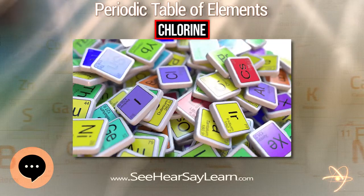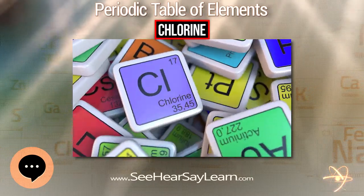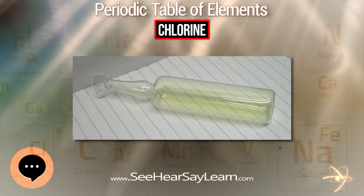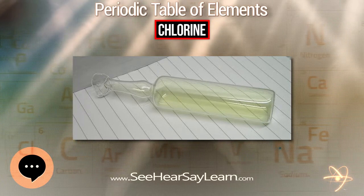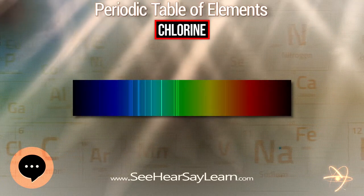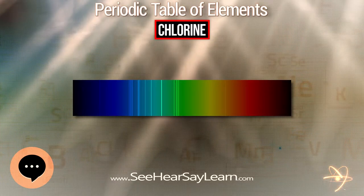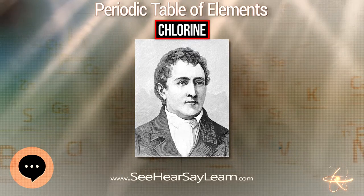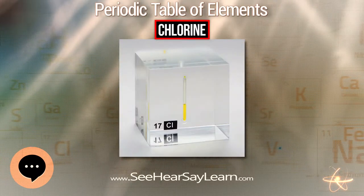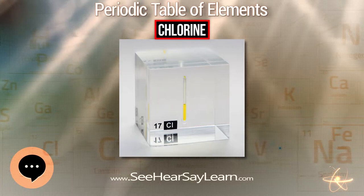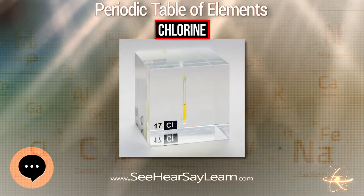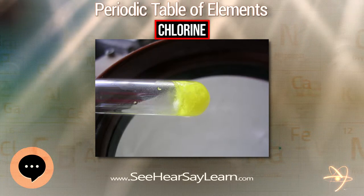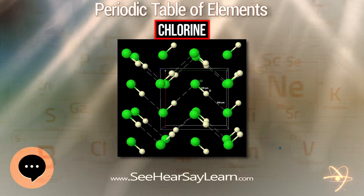Chlorine is a chemical element with symbol Cl and atomic number 17, the second lightest of the halogens. It appears between fluorine and bromine in the periodic table and its properties are mostly intermediate between them. Chlorine is a yellow-green gas at room temperature. It is an extremely reactive element and a strong oxidizing agent. Among the elements it has the highest electron affinity and the third highest electronegativity, behind only oxygen and fluorine.